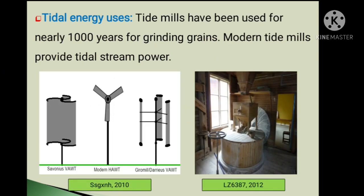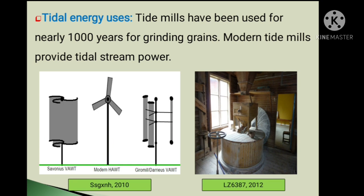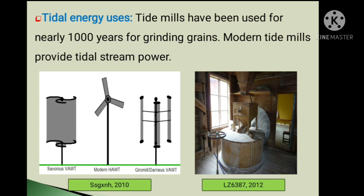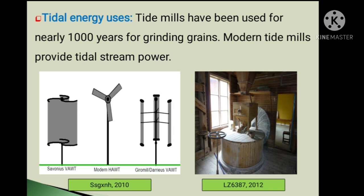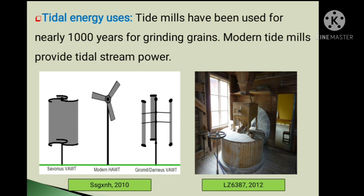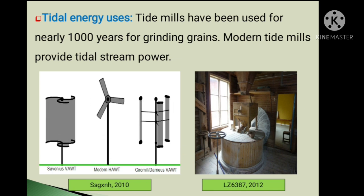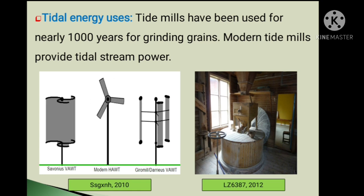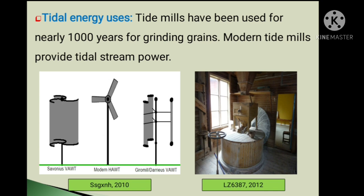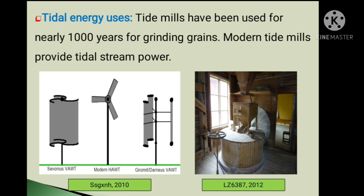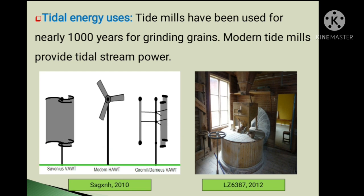So friends, what are the uses of tidal energy? Tide mills have been used for nearly a thousand years for grinding grains. See in the figure on the right side there is a grinding mill, which was used thousands of years ago for grinding grains. And on the left hand side, modern tide mills are shown. They provide tidal stream power. You can see in the left side figure the rotors are revolving. This is the same as a wind power plant.